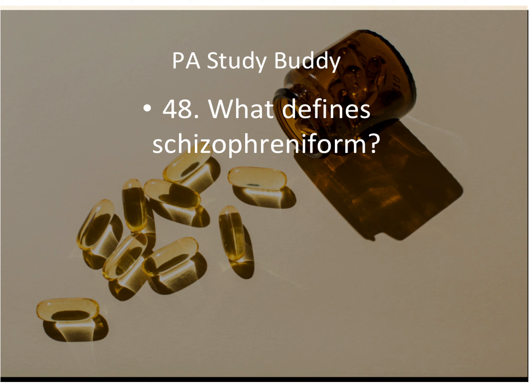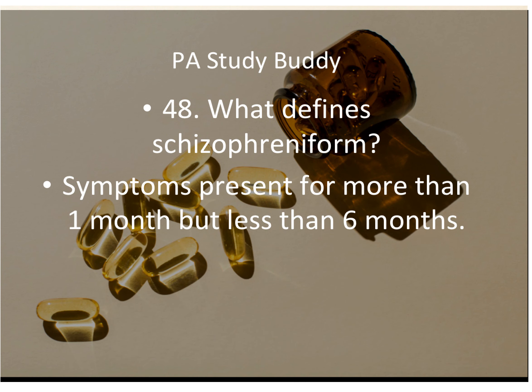Question forty-seven: what defines schizophreniform disorder? Symptoms present for more than one month but less than six months. Compartmentalizing by timeframes helps: schizophreniform is more than a month but less than six months. So if a patient has symptoms for three months, that's schizophreniform — more than a month but less than six.